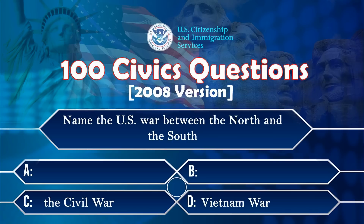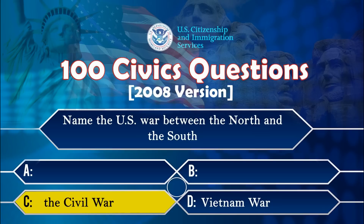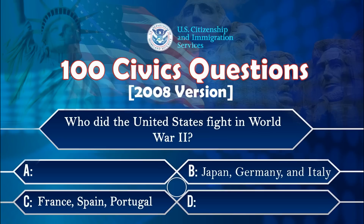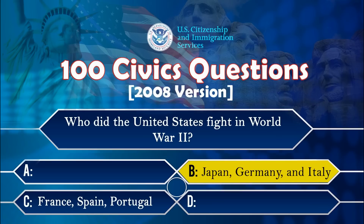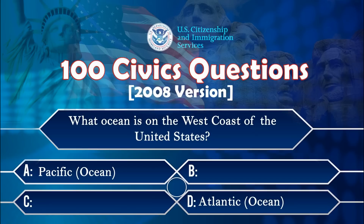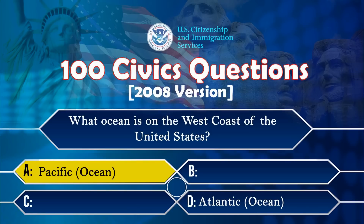Name the US war between the North and the South. The Civil War. Who did the United States fight in World War II? Japan, Germany, and Italy. What ocean is on the west coast of the United States? Pacific Ocean.